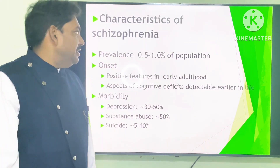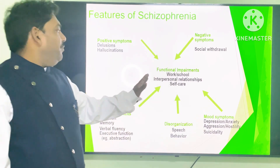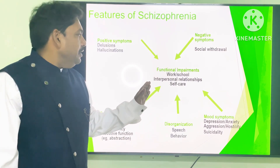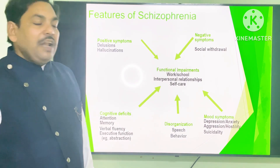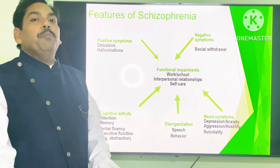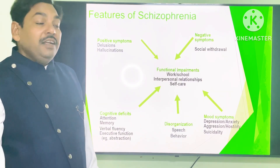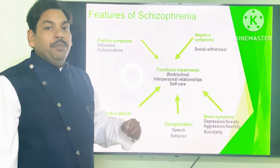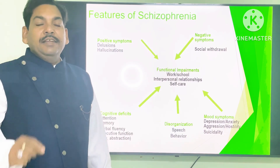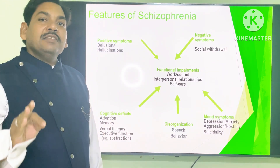The features of schizophrenia include functional impairment of work, school, interpersonal relationships, and self-care. These are affected by many symptoms. Positive symptoms include delusions and hallucinations. Delusions means false belief.